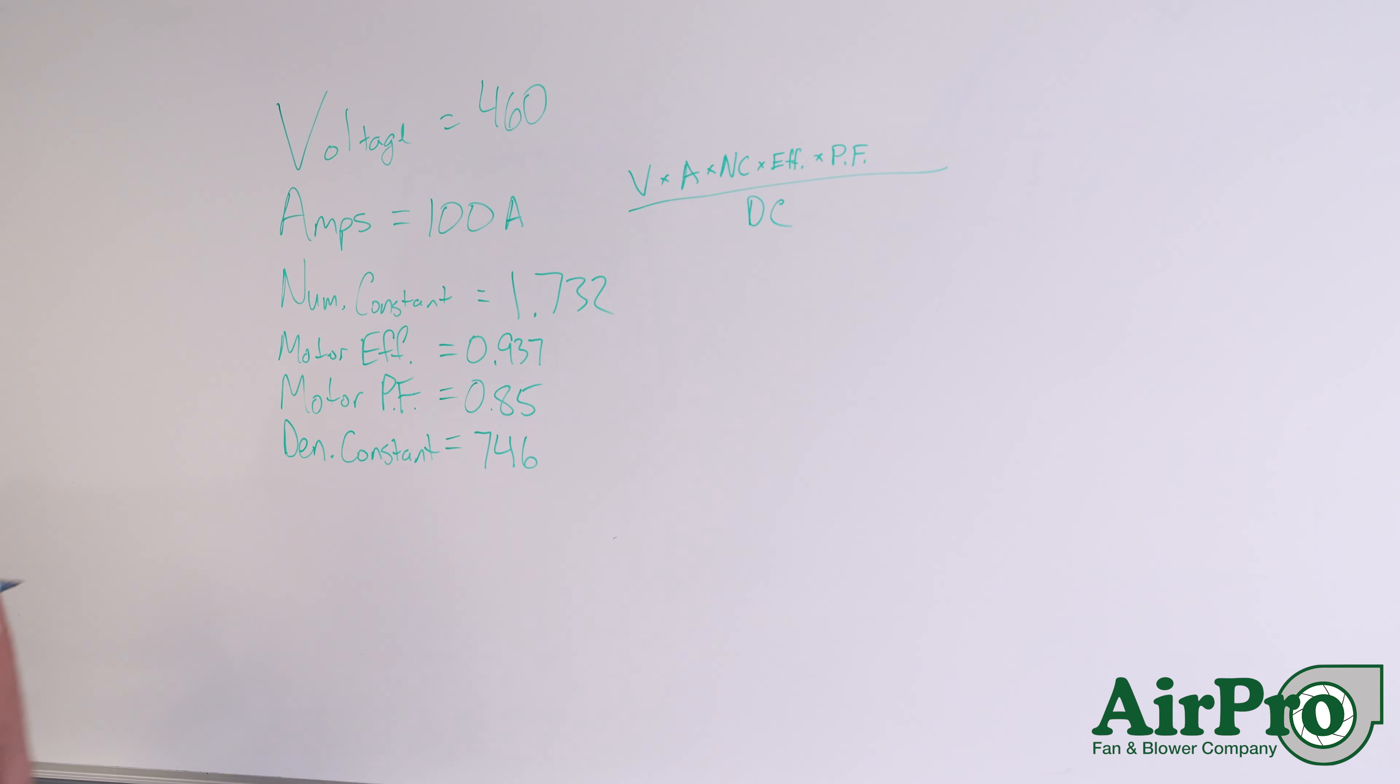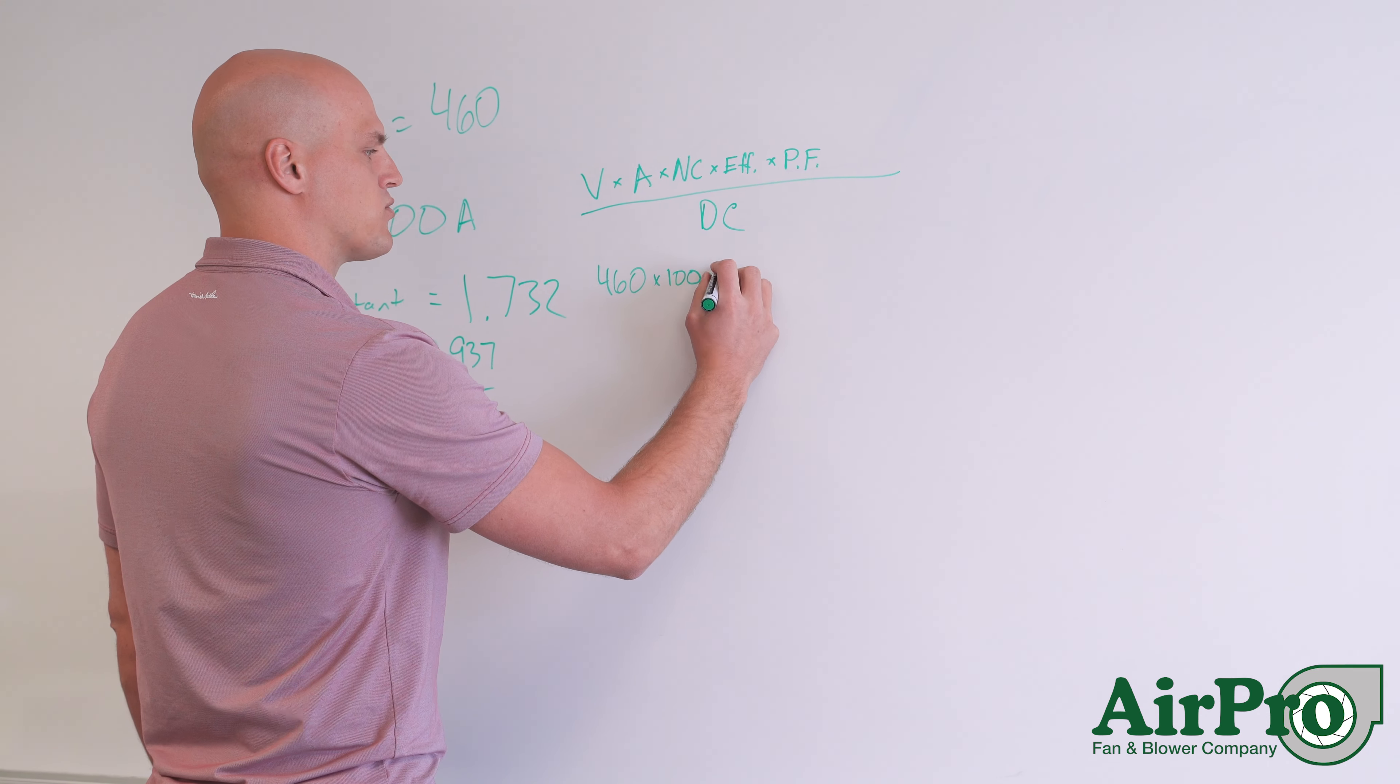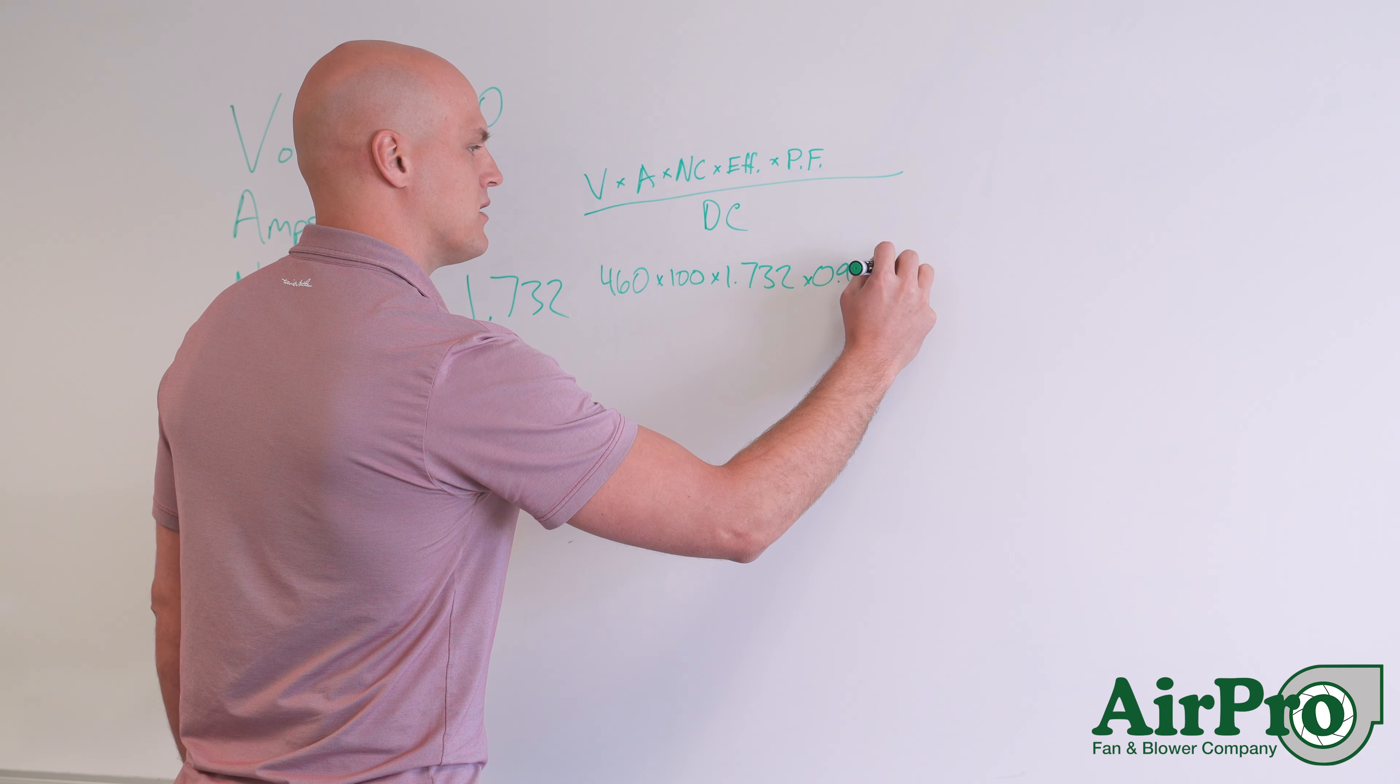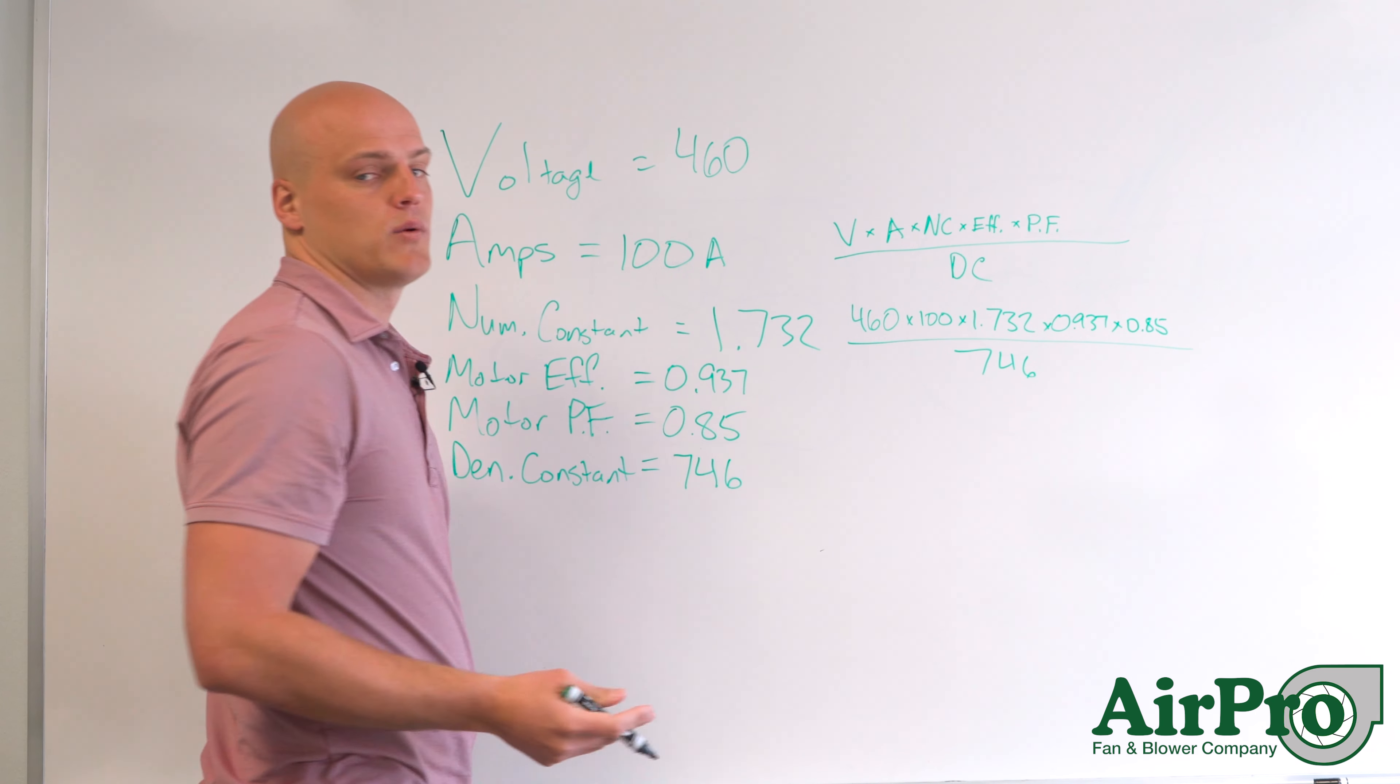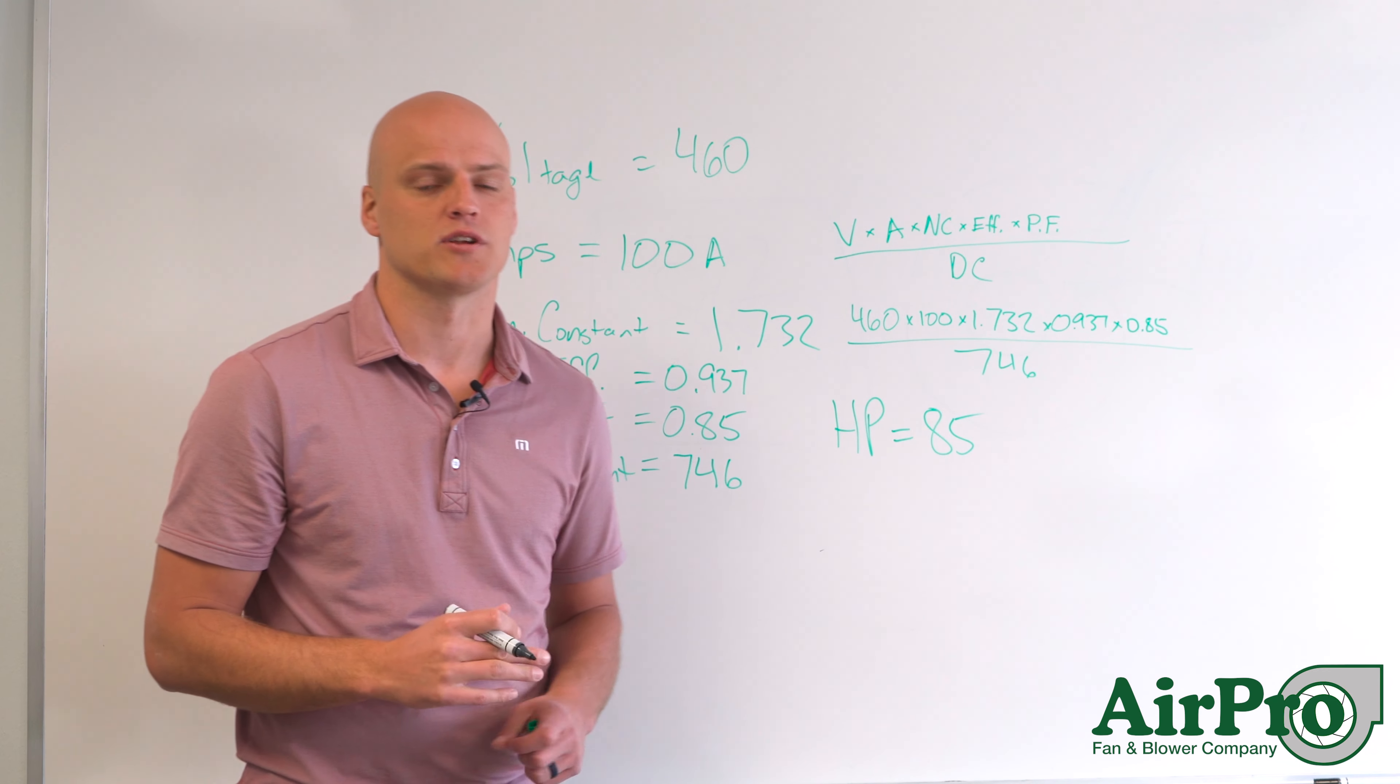So for our example, we have 460 times 100 times 1.732 times 0.937 times 0.85, all over 746. And we calculate a resultant horsepower of 85 being consumed at your motor.